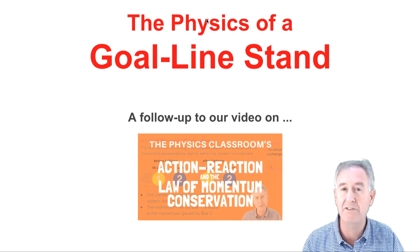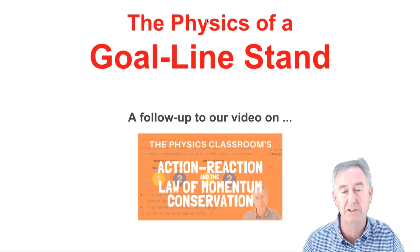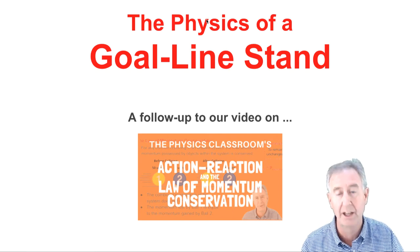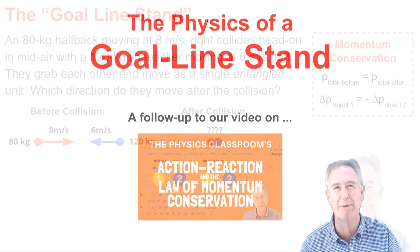In football, when the offensive team gets the ball near the goal line and tries to rush it over, the defensive team tries to make a stand. The goal line stand is all about physics, the physics of momentum and collisions. Let's talk about it.